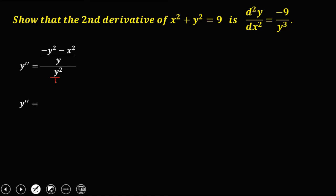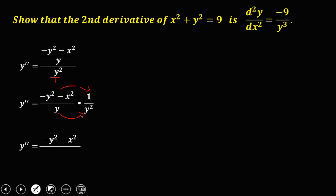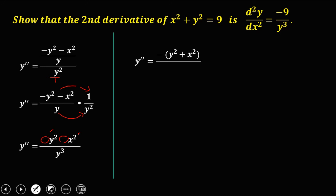Multiplying by the reciprocal of y squared (1/y²), we get negative y² minus x² over y³. Factoring out the negative from the numerator gives negative times positive y² plus positive x² over y to the power 3.